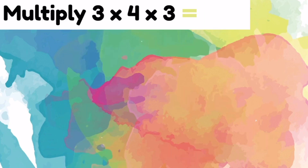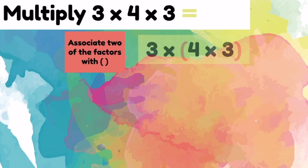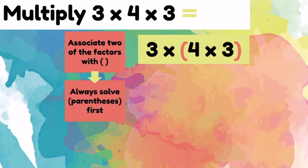3 times 4 times 3. Let's associate the 4 and the 3 together. Remember, always solve parentheses first, so we have to solve 4 times 3 first. 4 times 3 equals 12.